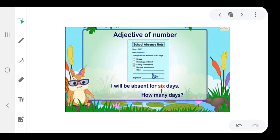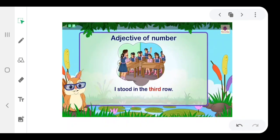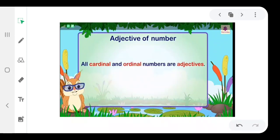Adjective of number also answers the question 'In what order?' For example, I stood in the third row. All cardinal and ordinal numbers are adjectives.